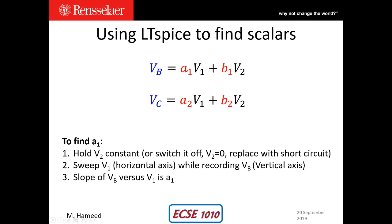So let's see if we can find A1 for the purpose of this video. For the purpose of this video, I'm going to make V2 a constant and I'm going to apply a DC sweep on V1. I'm going to get a linear relationship hopefully, and then the slope of that relationship between VB and V1 is going to give me A1.